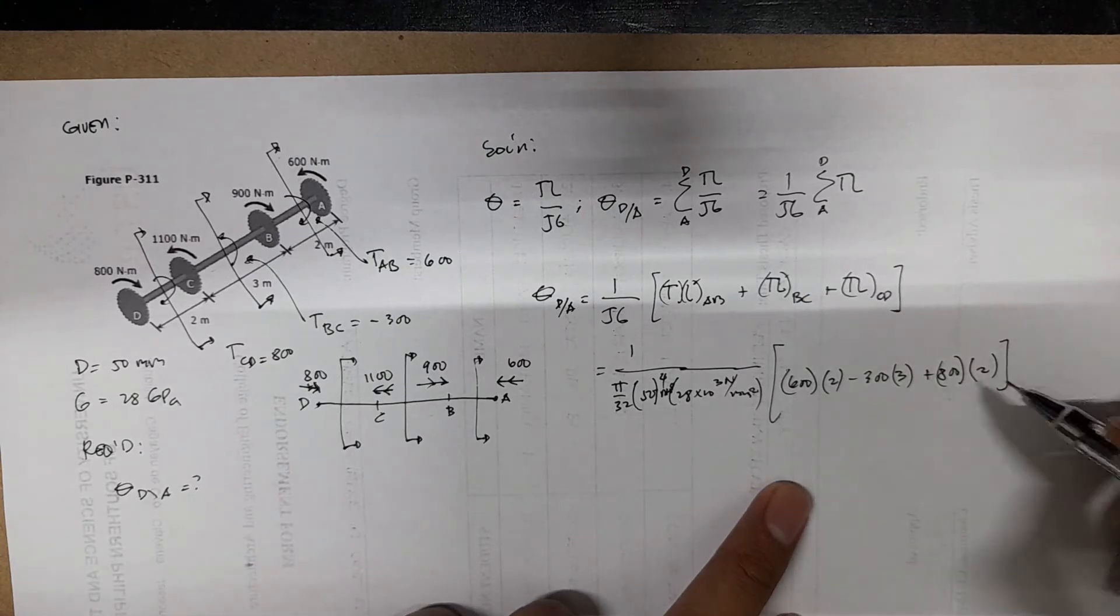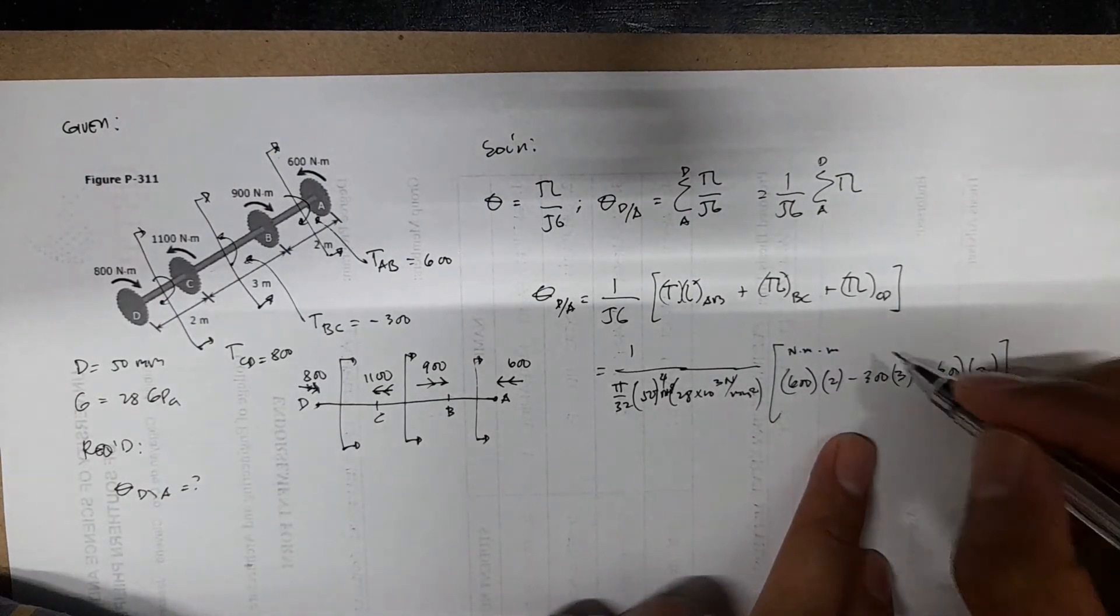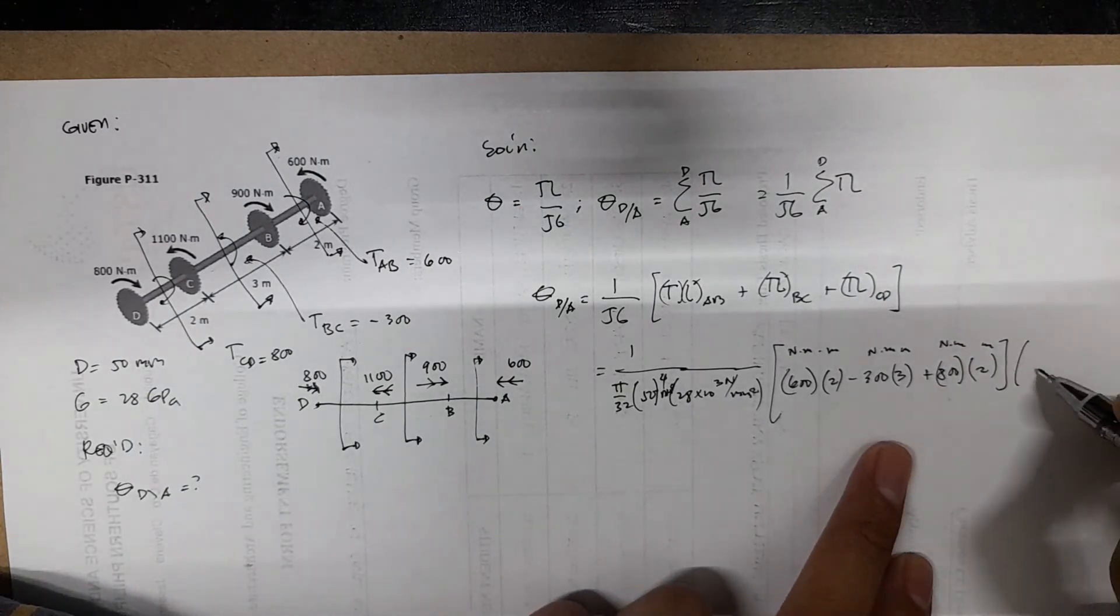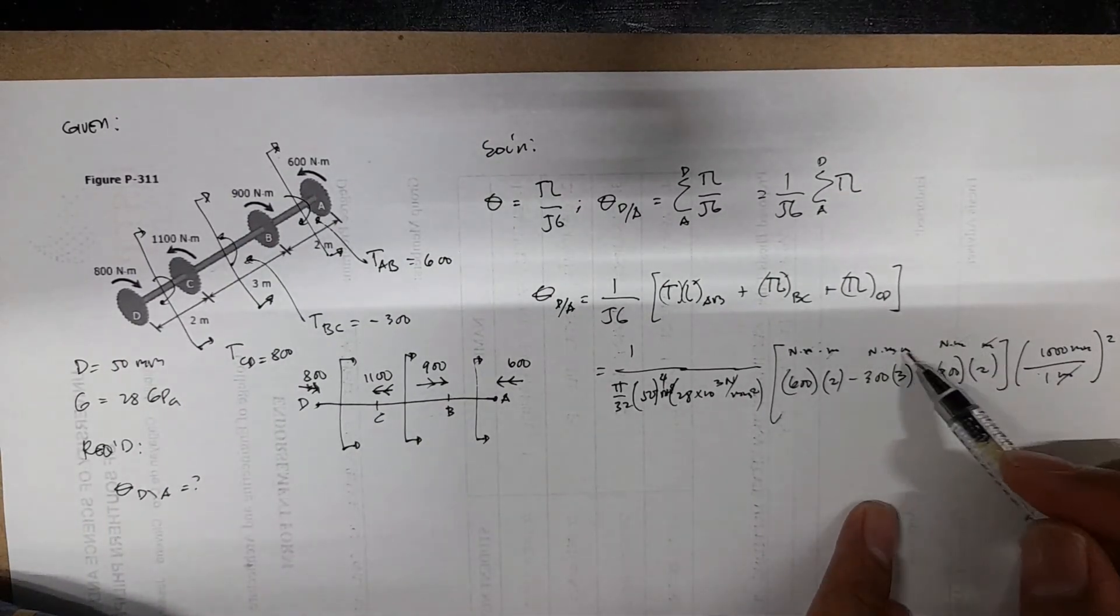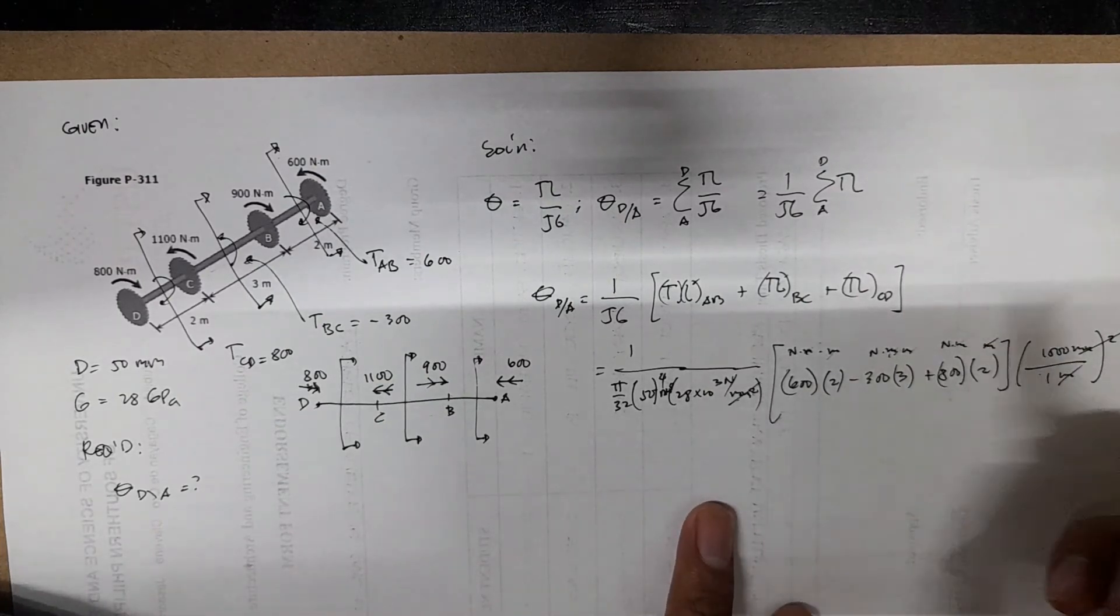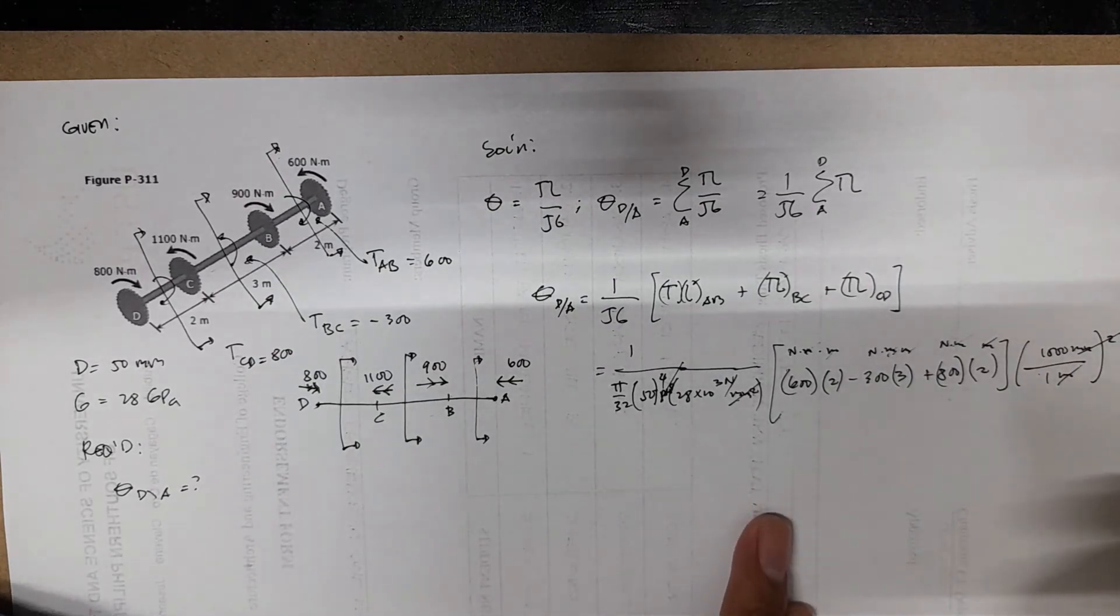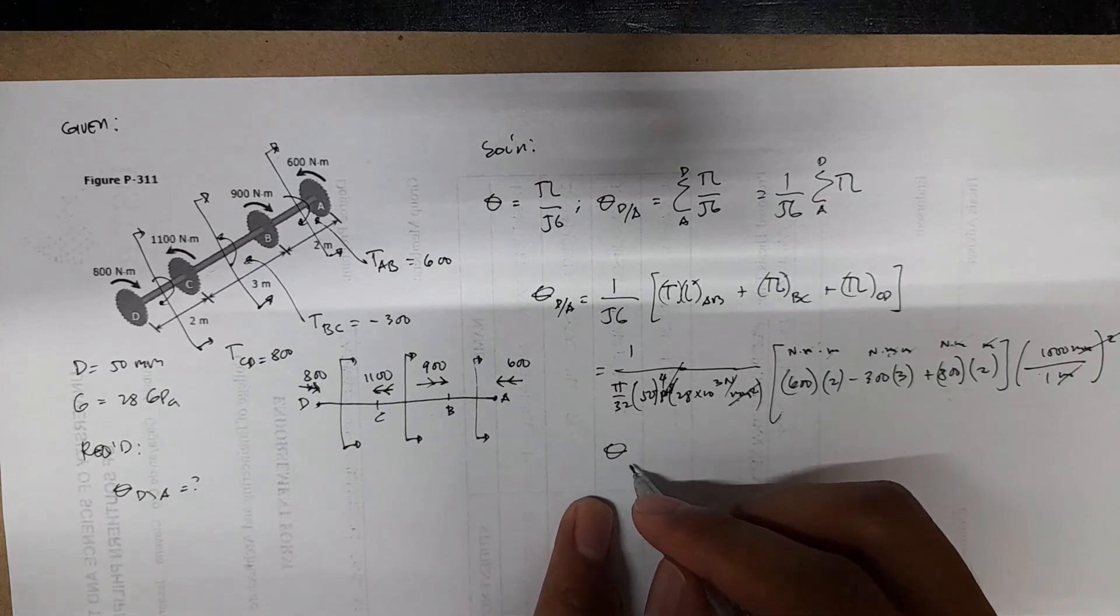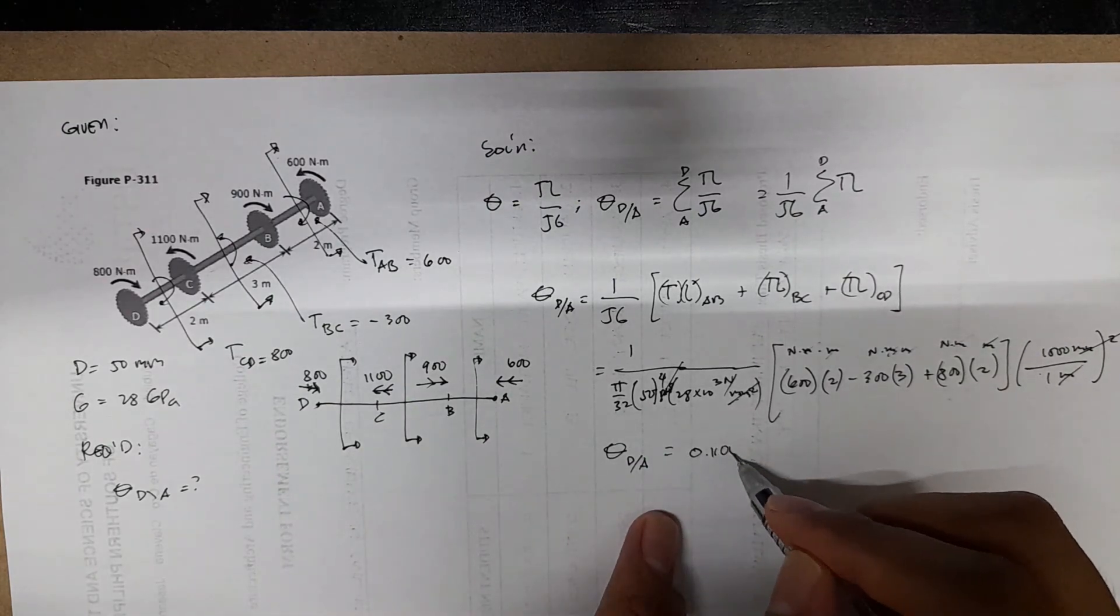Since this is in newton meters, we will convert. We have newton meter, meters, newton meter, meter, newton meter, meter. So we'll have to convert: 1 meter equals 1000 mm squared. So cancel, cancel, cancel, cancel. This one cancels out with this one, and this one.